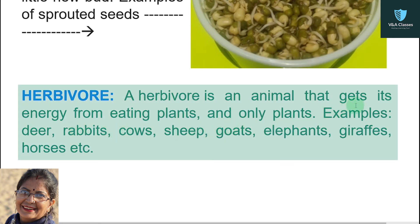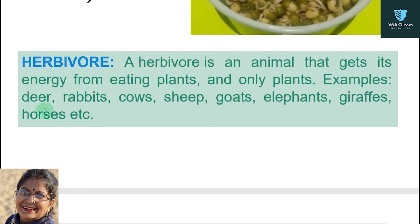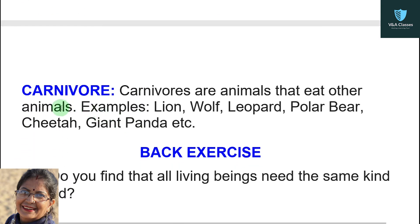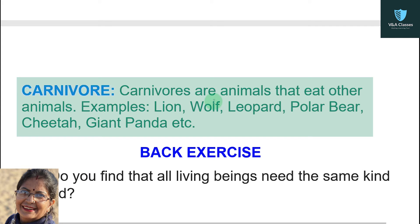Next is herbivore. A herbivore is an animal that gets its energy from eating plants and only plants. Examples include deer, rabbits, cows, sheep, goats, elephants, and giraffes. Next is carnivore. Carnivores are animals that eat other animals. Examples include lion, wolf, leopard, polar bear, and cheetah.